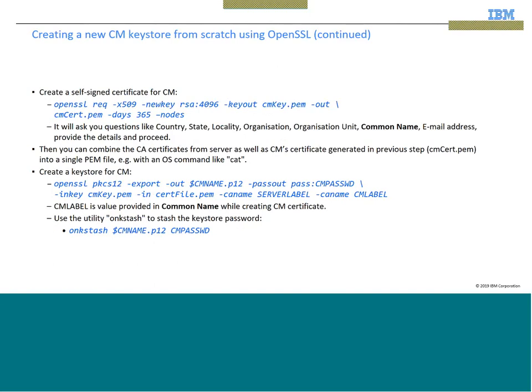For the connection manager, create a self-signed certificate using the OpenSSL command. When you execute this command, it will ask questions like country, state, locality, organization, organization unit, common name, email address, etc. Provide those details according to your location. Then combine the CA certificates from the server as well as the connection manager certificate generated in the previous steps. The OpenSSL command at the top creates the cmsert.pem file, which is the connection manager's certificate file.